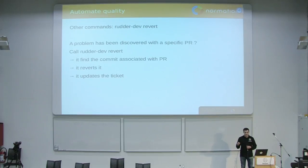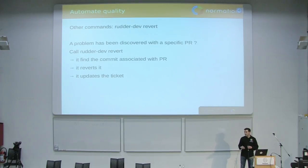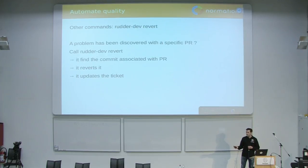And the command we also use sometimes, because it's not easy to find the right git command to run, is revert. You can revert by just giving it an issue number and that's all. The command finds the matching commits and reverts them in every branch that we maintain. And it updates the issue, of course.